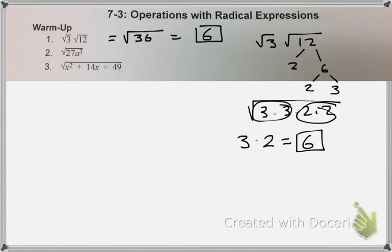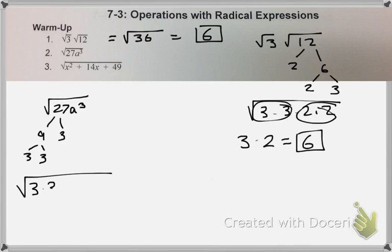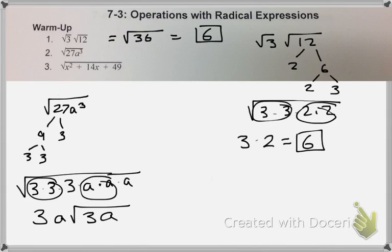For number 2, we factor it out. So we have 3 times 3 times 3 times a times a, group of 2, group of 2, radicand, and you need your absolute value sign around your a, because your index is even.